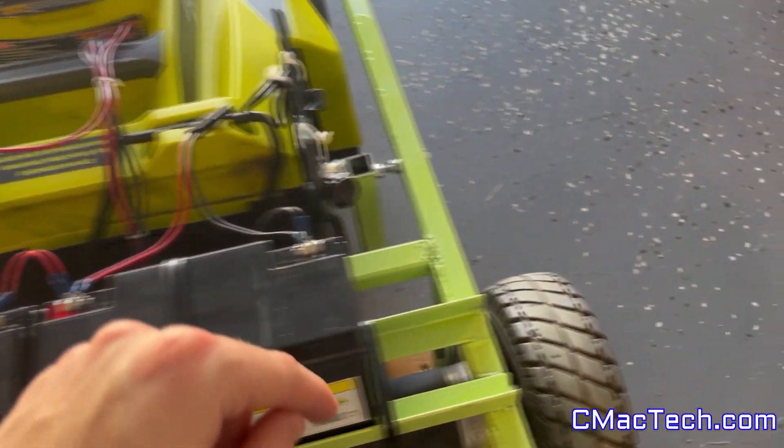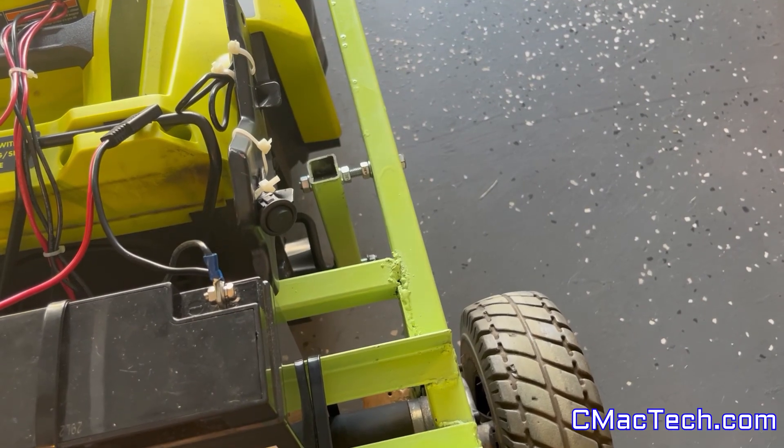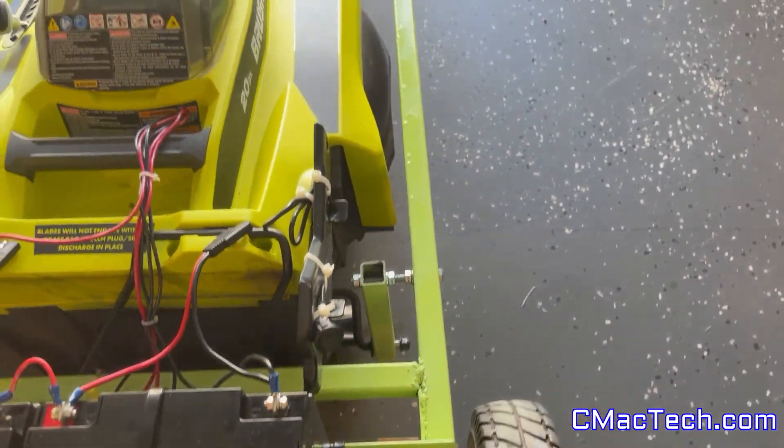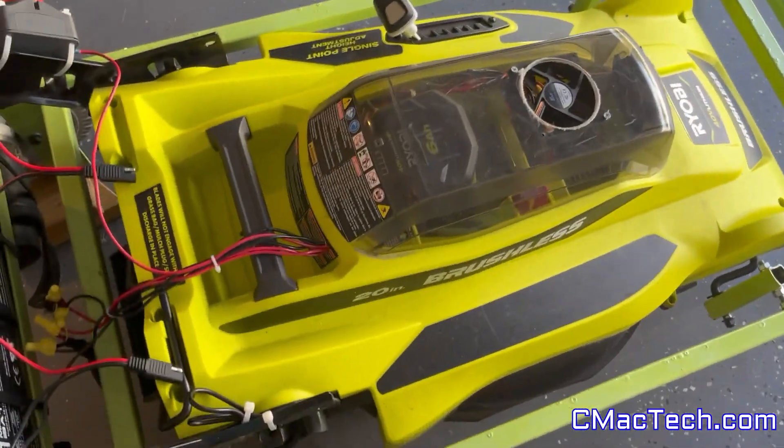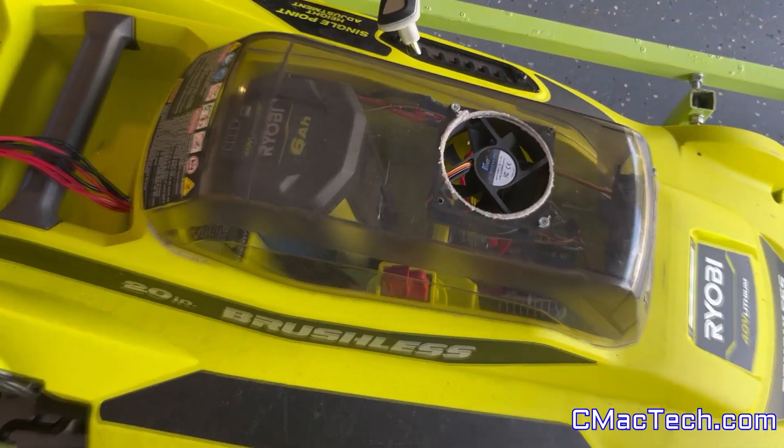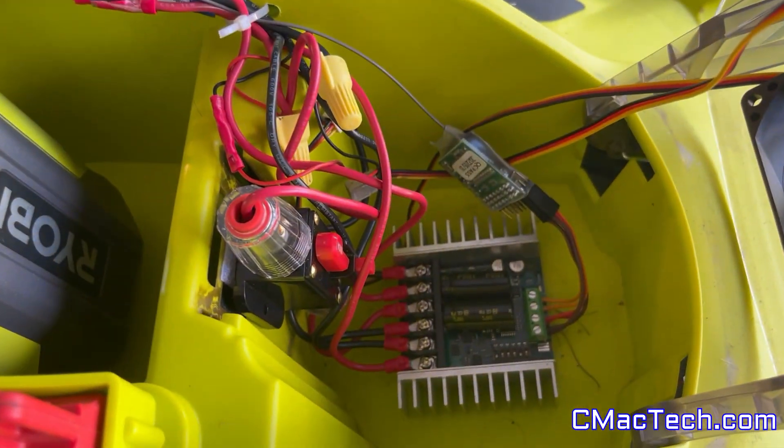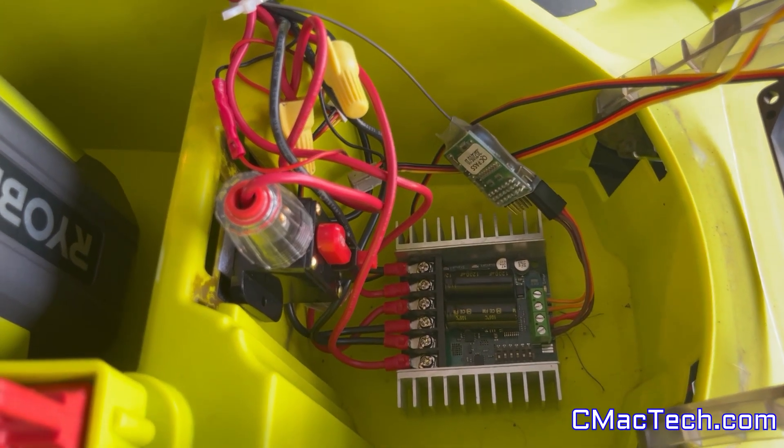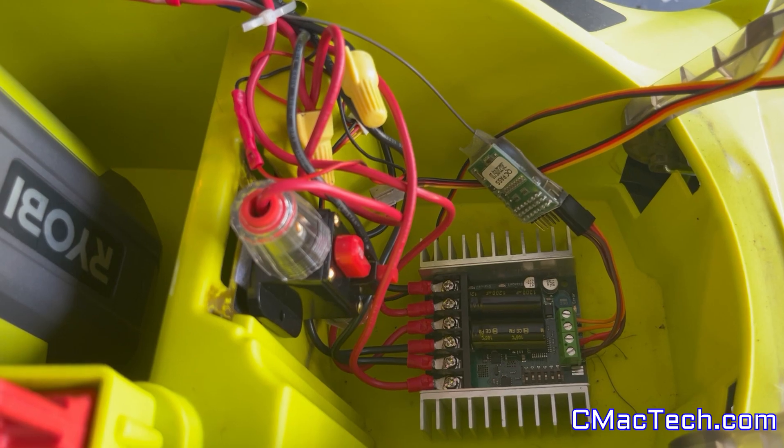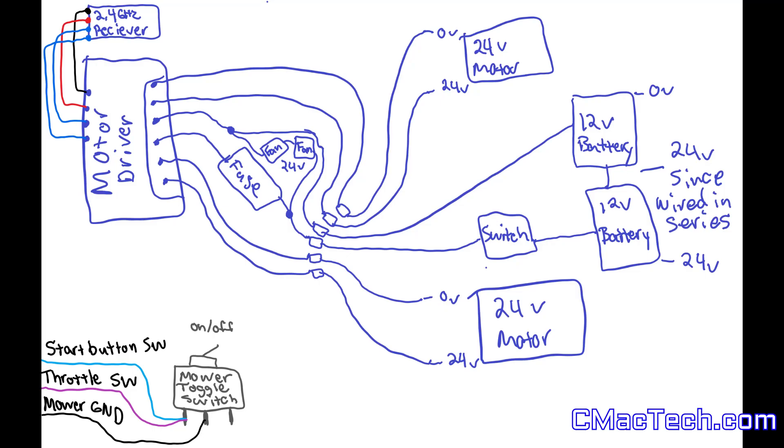Then we got our battery switch and then look at that, toggle switch for the operation of the mower. I'm going to show you a little wiring diagram I drew in a bit just so it's easier to understand how I wired this thing. Again, wire nut connectors is how I wired everything, nothing really fancy. The motor driver and 100 amp fuse all connected together.